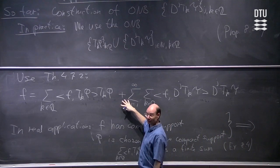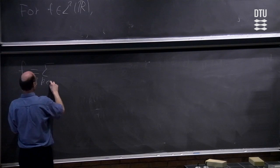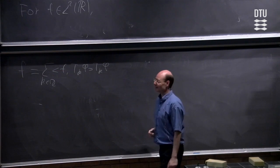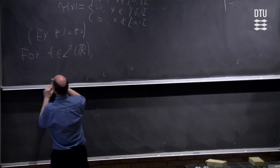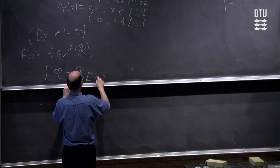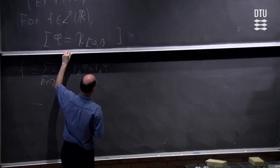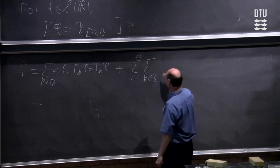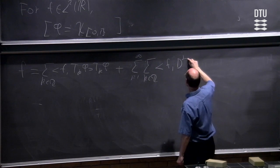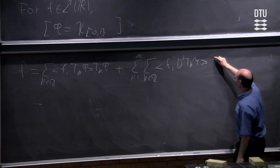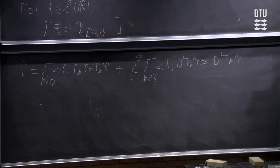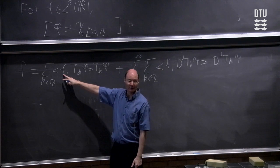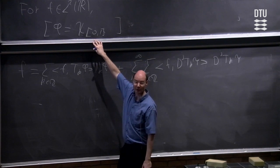Let's look at our expansion. We start with f and take the expansion: sum over k in ℤ of ⟨f, T_k φ⟩ T_k φ, where φ is the characteristic function of the interval [0, 1]. Then plus the sum from j = 1 to infinity, sum over k in ℤ of ⟨f, D^j T_k ψ⟩ D^j T_k ψ. The first sum is not a problem — it is just finite if the function f has compact support, because φ is supported on [0, 1]. This is a finite sum if f has compact support.